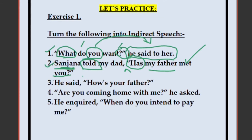Third: He said, 'How is your father?' 'How' is a WH question. So: He asked — no 'if' or 'whether.' Directly: He asked how — 'is' is simple present, changing to simple past: was. 'Your father' can be written as my father, his father, or her father depending on context — it's not specified who he was speaking to. So: He asked how his/her/my father was.